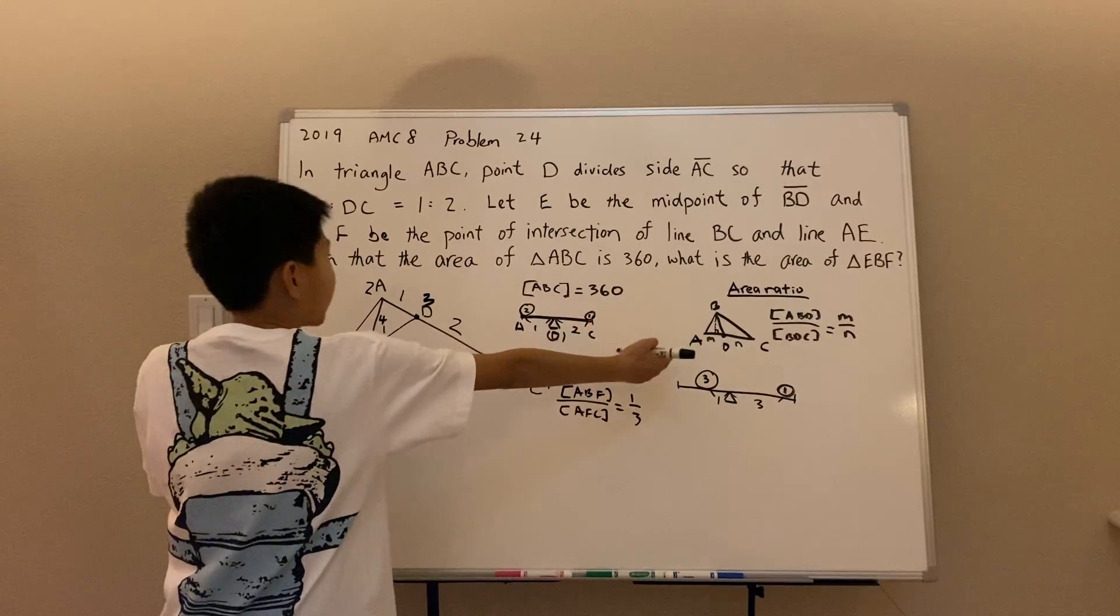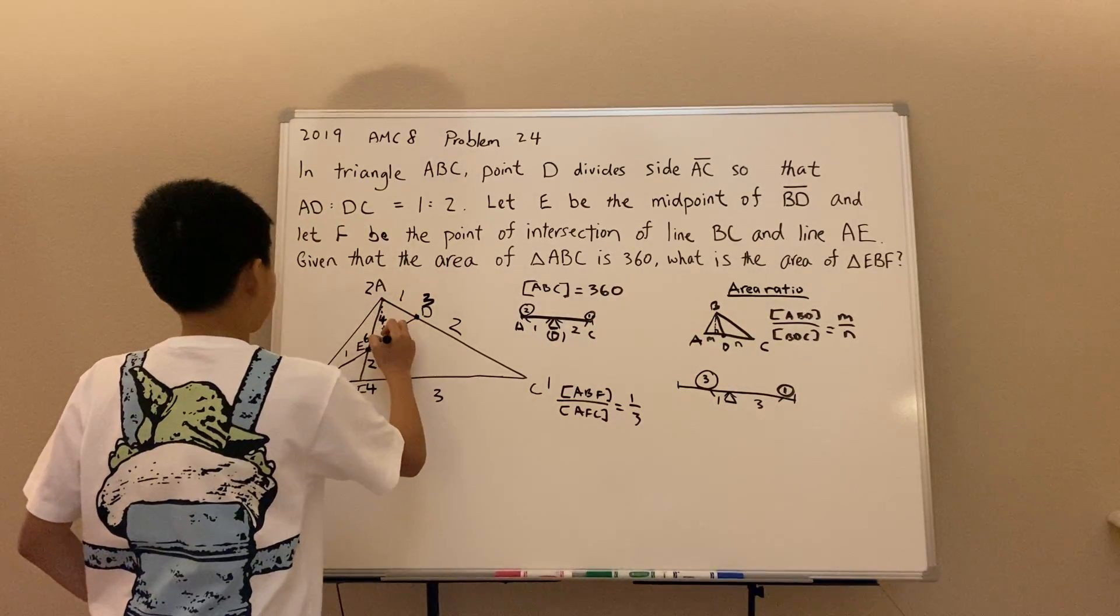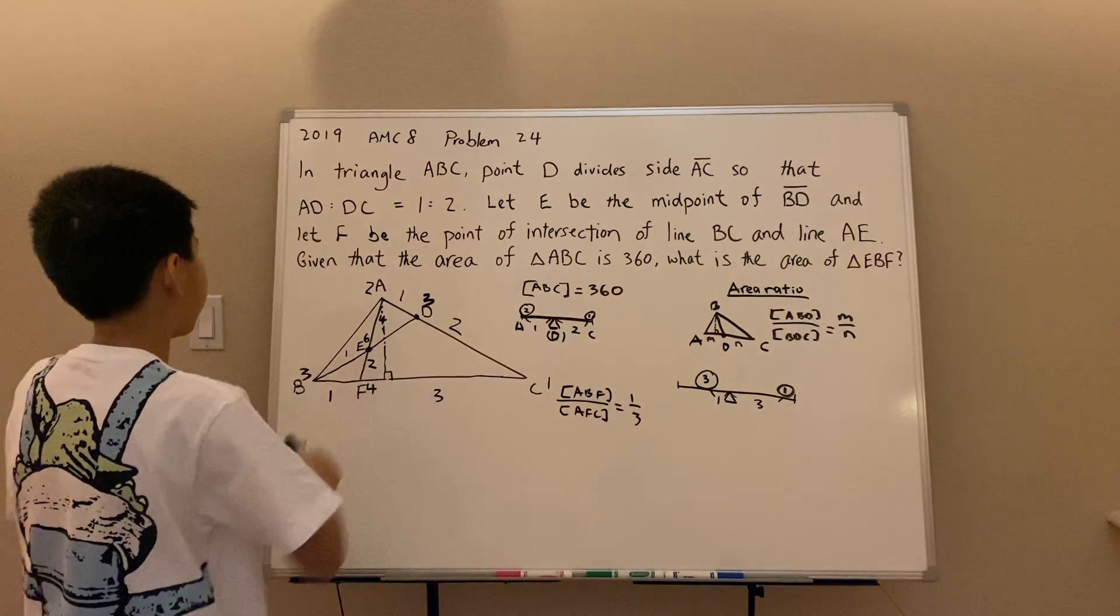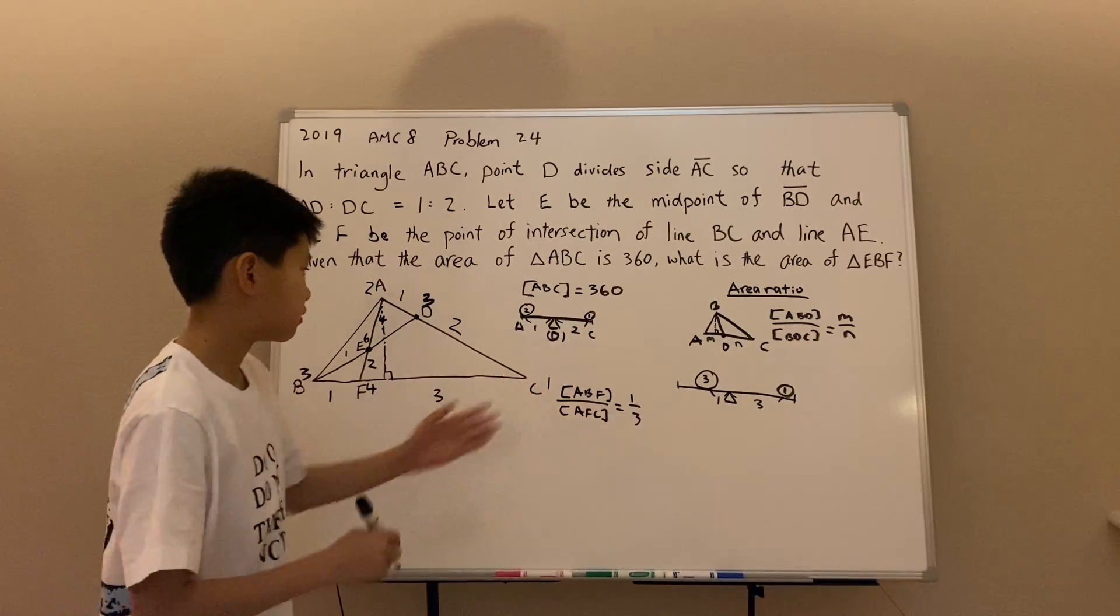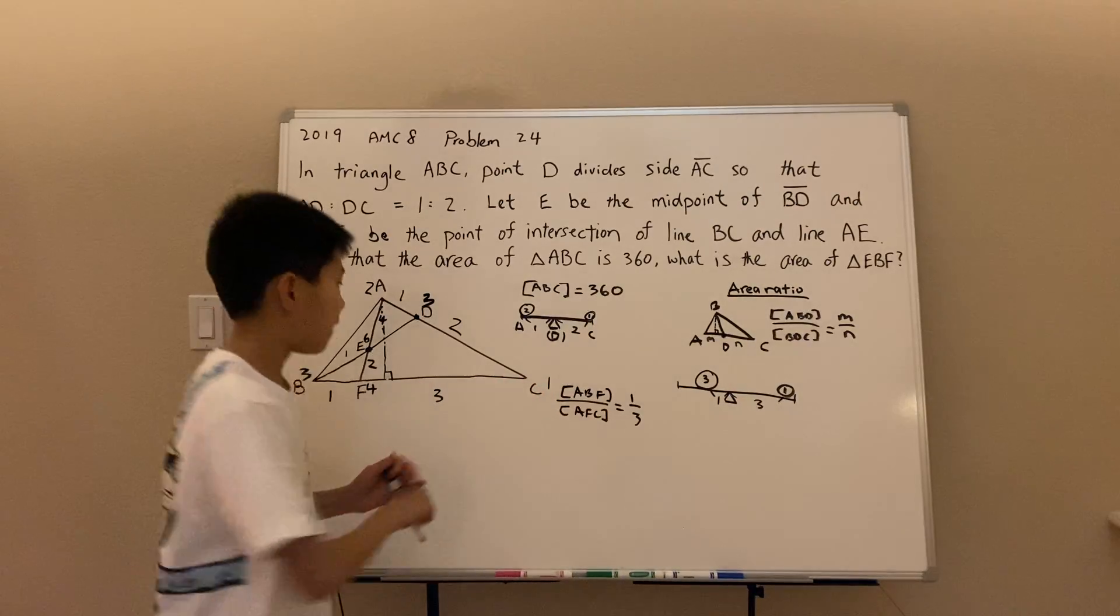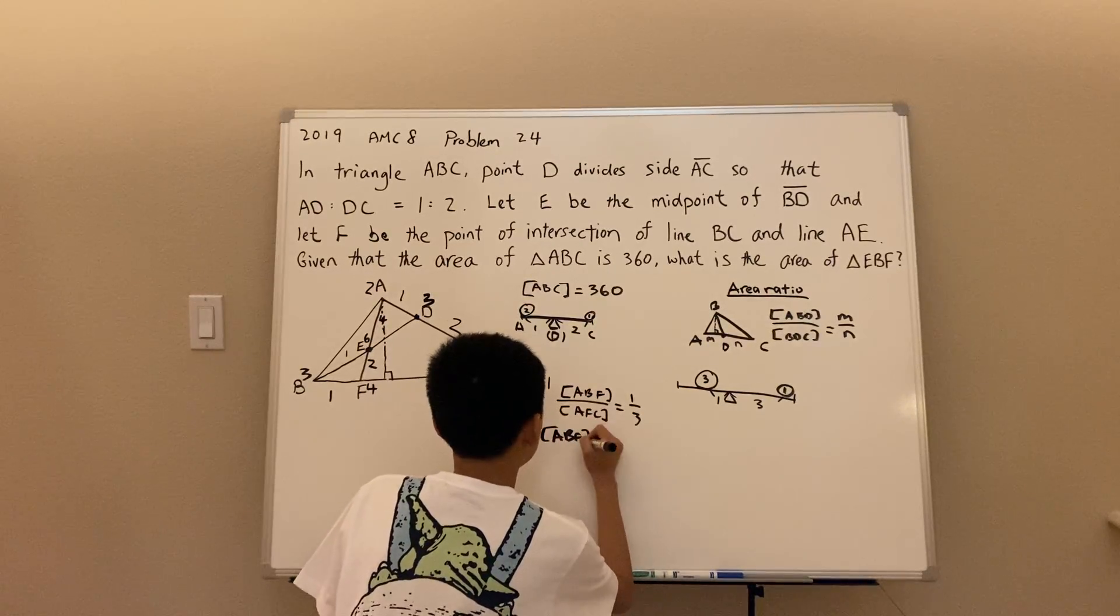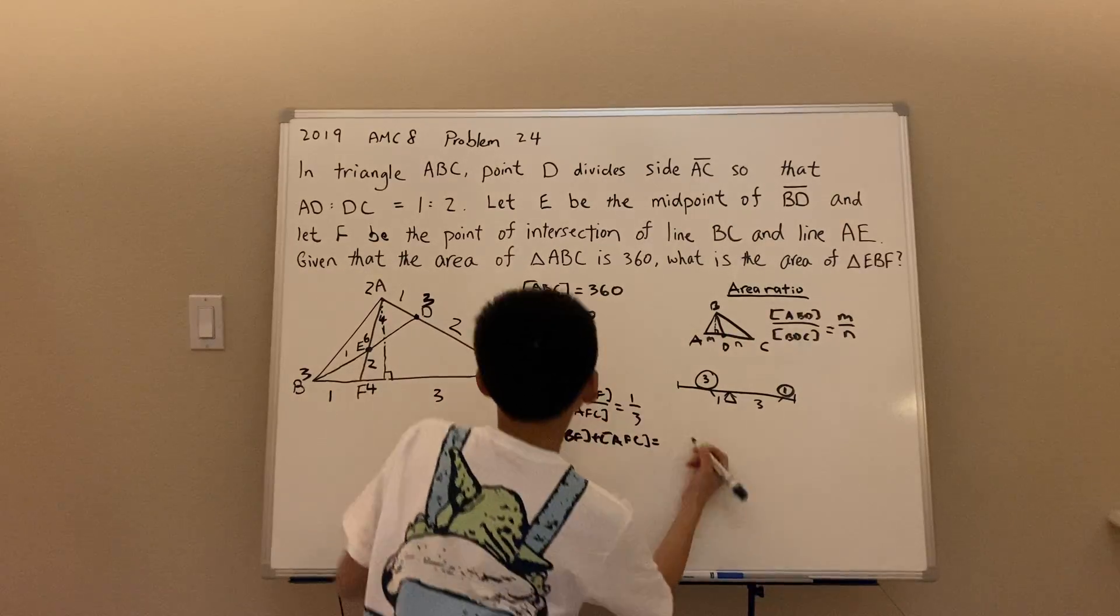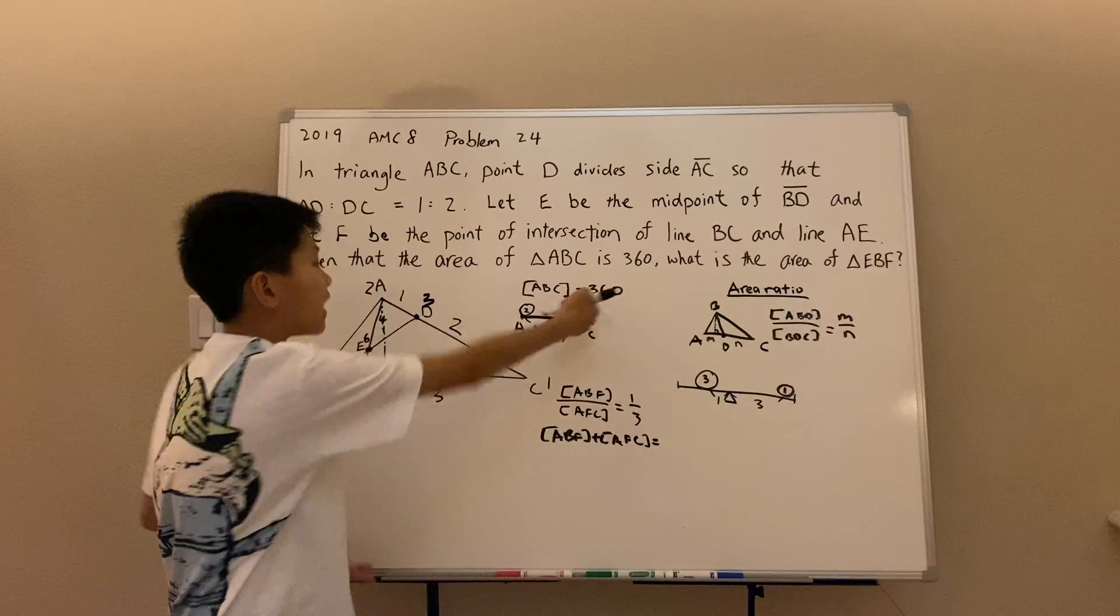Because it's the exact scenario here. They have the same height. Let's draw out the height. And that means that the ratio of the areas of the two triangles is just the ratio of the bases. One to three. We also know that the areas total to the area of ABC. And we know that that's just 360.